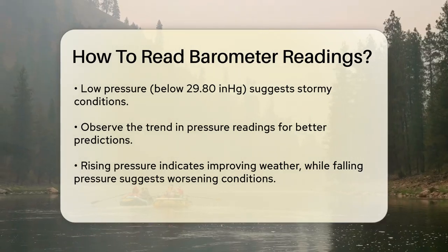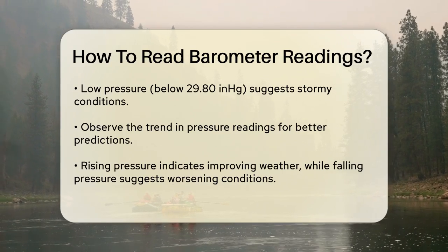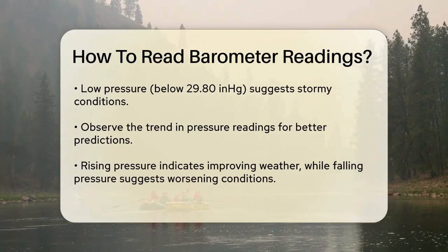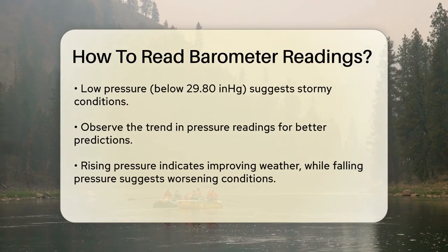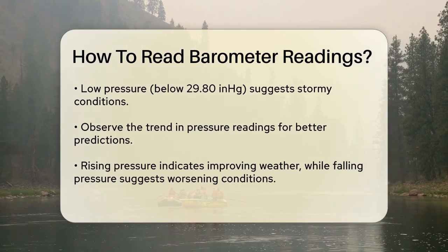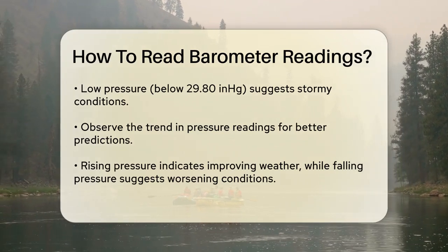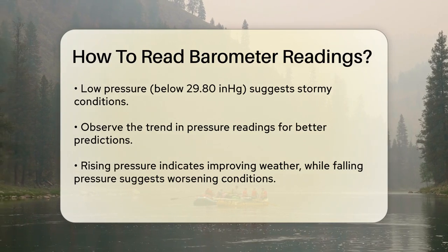For more precise predictions, check the rate of change. A rapid drop in pressure often precedes severe weather, like thunderstorms or hurricanes, while a gradual decrease might signal light rain or overcast skies.